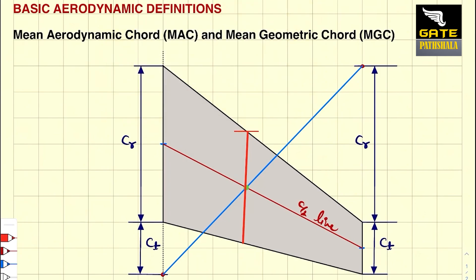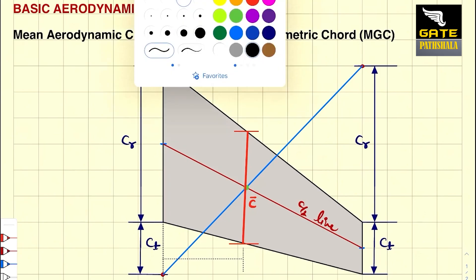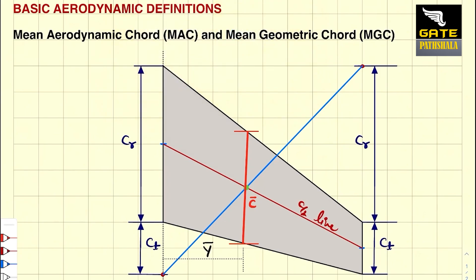Or you can say it is actually the mean geometric chord. Let us denote this with C bar. So this is located at a distance Y bar from the root of the wing. This is what is called the mean geometric chord, and it is a good design practice to take the mean geometric chord as equal to the mean aerodynamic chord.